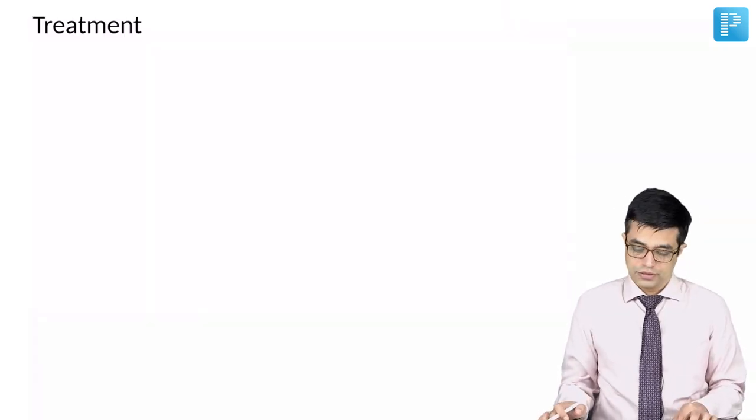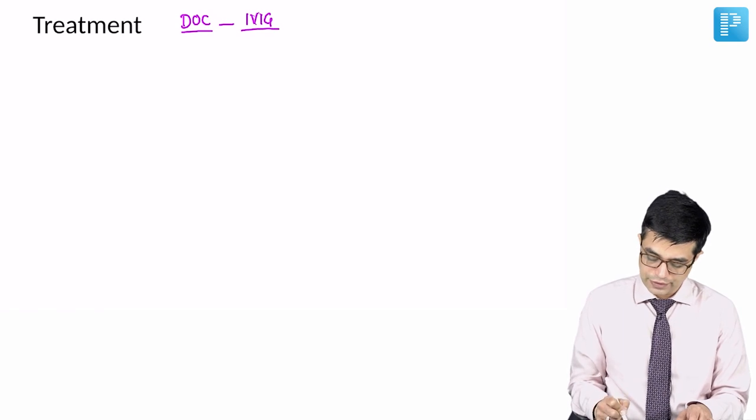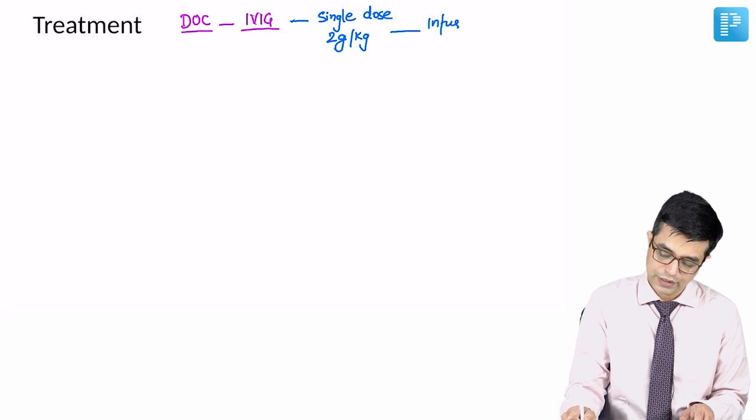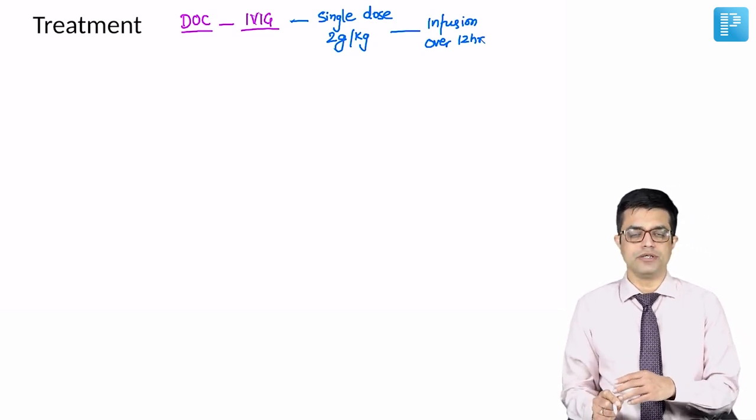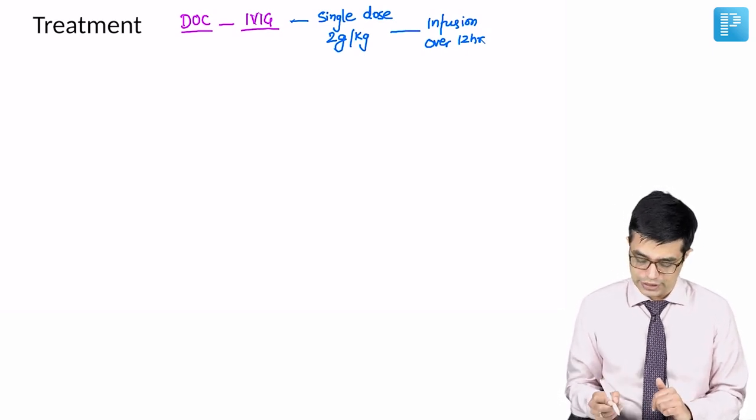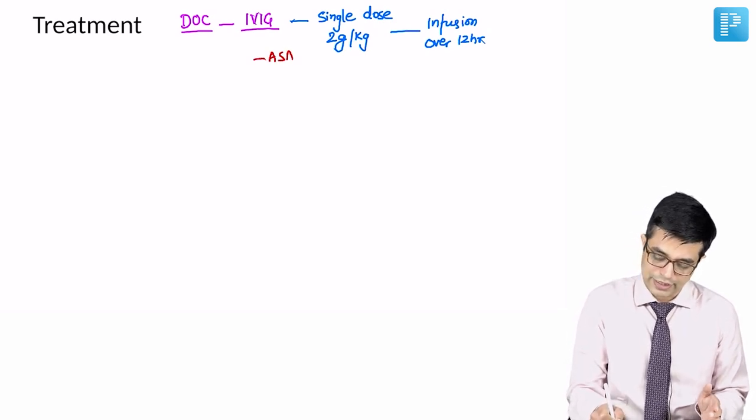Moving to treatment of Kawasaki disease, drug of choice is IVIG. How much IVIG do you give? We give single dose of IVIG in a dose of 2 gram per kg. It is given as infusion which is completed over about 12 hours. Sometimes infusion can be continued up to 24 hours, but usually infusion is given over a period of 12 hours, single dose IVIG. When should you give IVIG? Ideally, it should be given as early as possible, so I am writing ASAP.